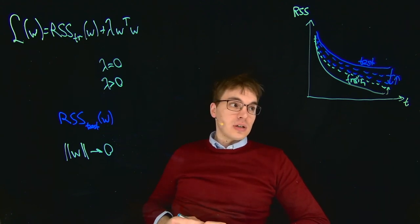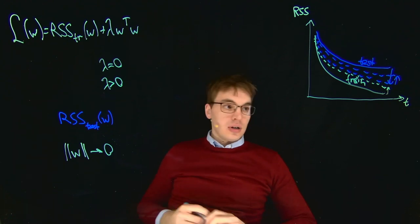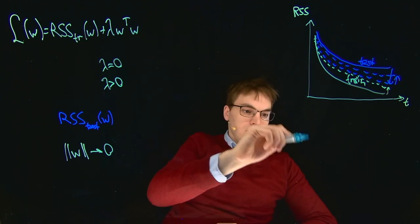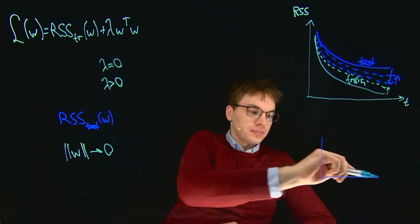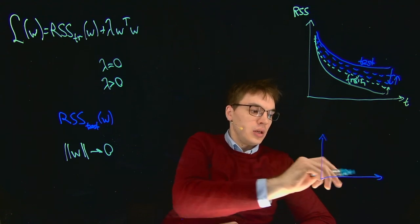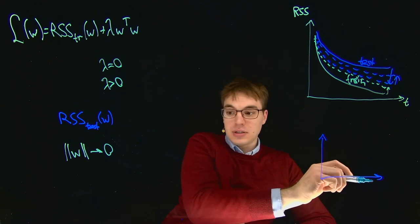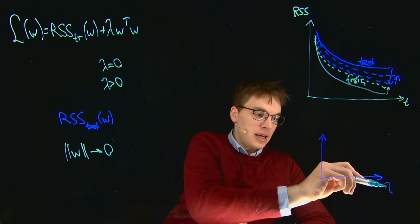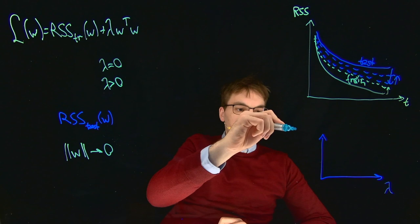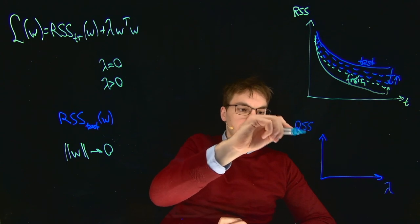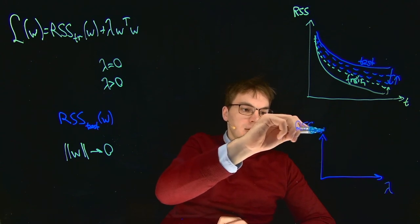The final training curve would look like this. So let's consider the plot over here. If in this case we had this t, this training time, and we take our lambda and get our final RSS in the test case...